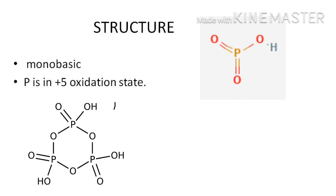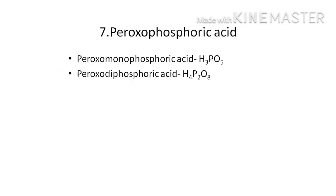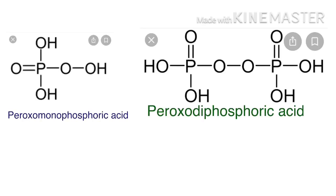The last oxoacid of phosphorus is peroxophosphoric acid. Two peroxophosphoric acids are known: peroxomonophosphoric acid and peroxodiphosphoric acid. Both are strong oxidizing agents. Peroxomonophosphoric acid is obtained in solution by treating phosphorus pentoxide with 30% hydrogen peroxide. Peroxodiphosphoric acid is obtained by electrolysis of a concentrated solution of potassium phosphate and potassium fluoride. Their structures are represented as shown here. Apart from these, a number of polyphosphoric acids and their salts are also known.